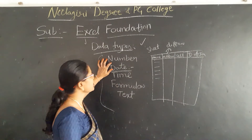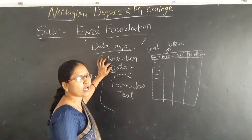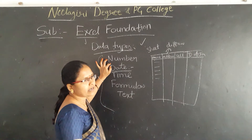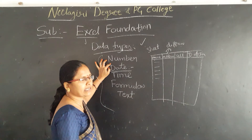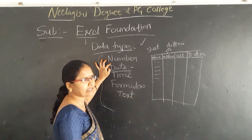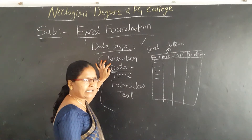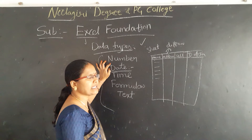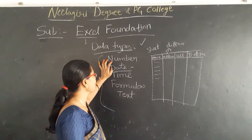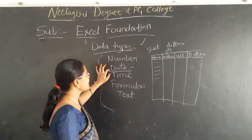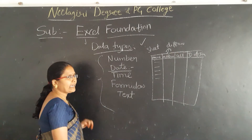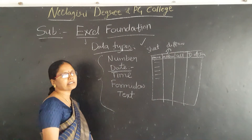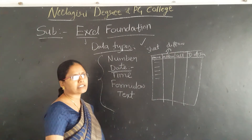Numbers are nothing but normal numbers — whole numbers, decimal numbers, or percentage-level numbers. Whereas date has a certain format.